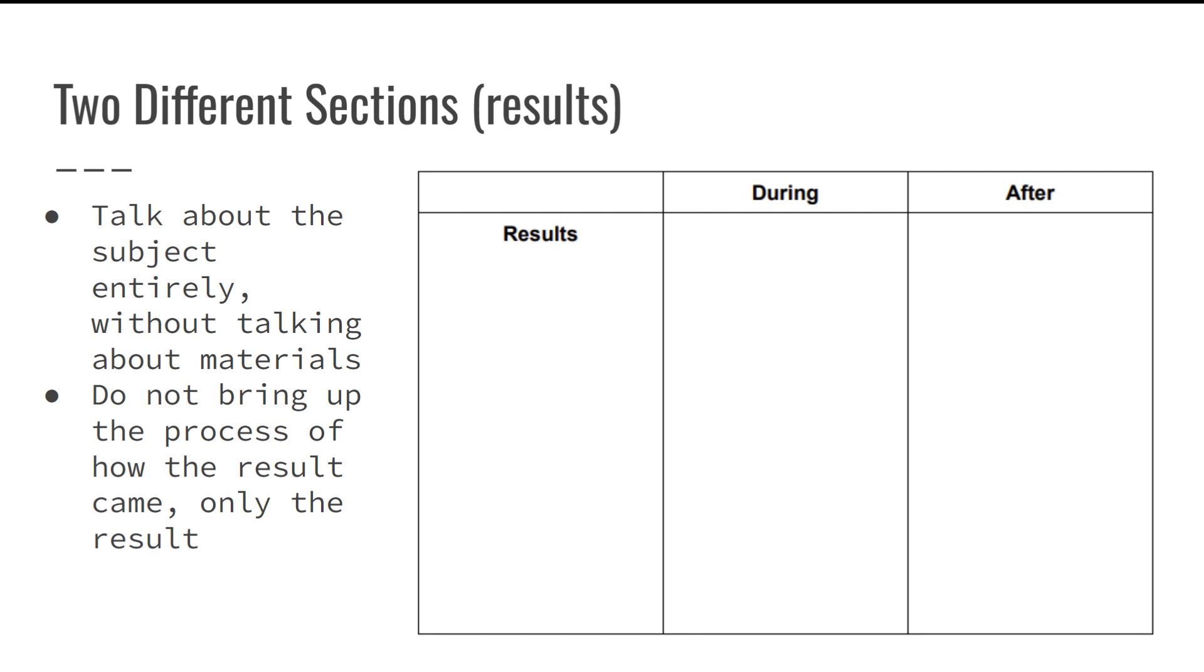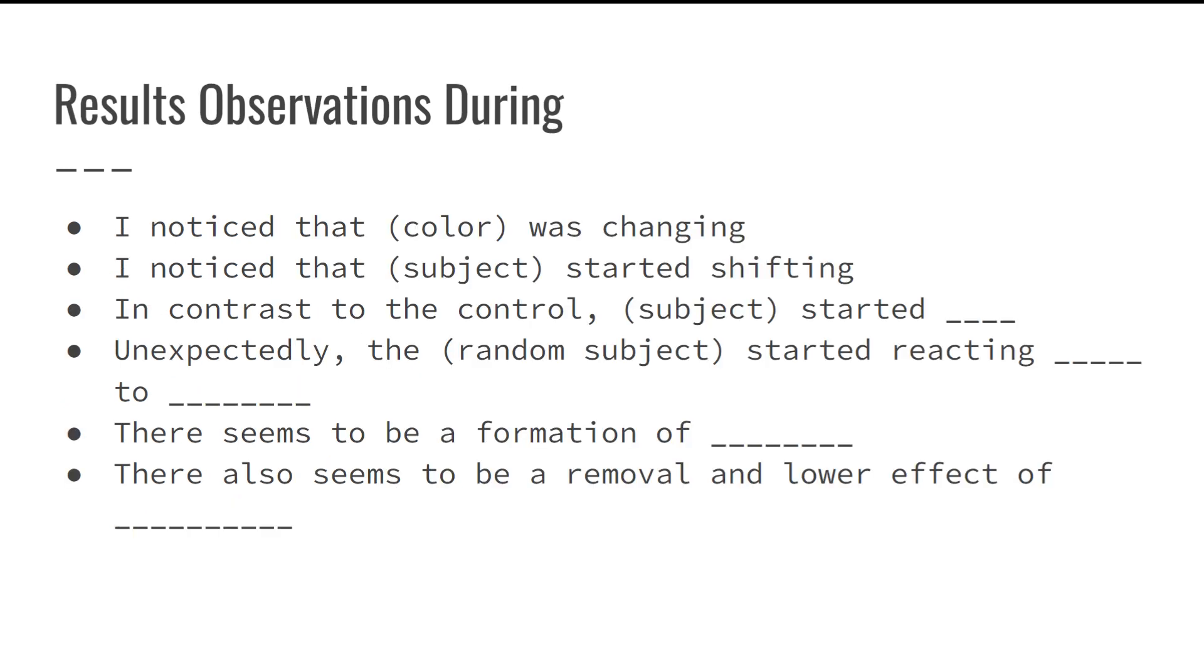Next, we don't want to talk about the process, only the result, because that could go back to our procedures, which could get some points off on your exam. Some sentence starters could be like this, where you could be talking about the color, maybe something happening to the control, like a difference, or maybe something unexpected happening, or like a formation of a new chemical if this is a chemical experiment, or you could find and see that there's a removal or lower effect being caused on the subject, like removal of certain colors or some texture.